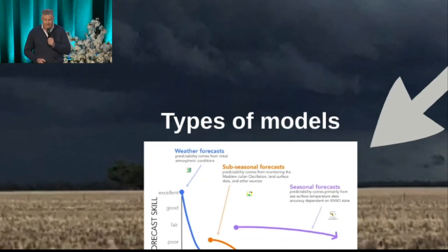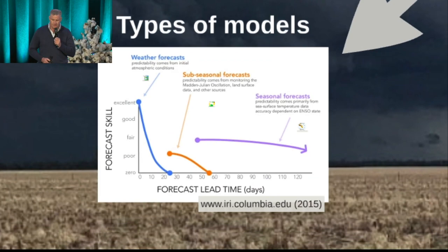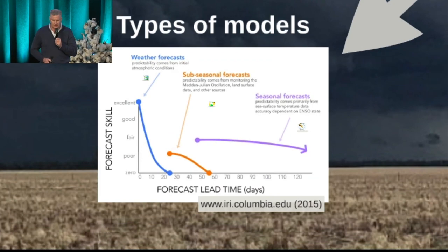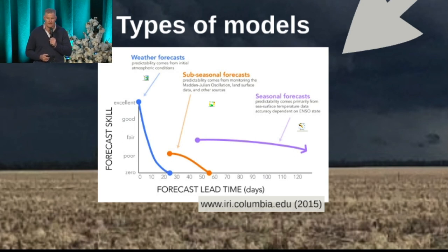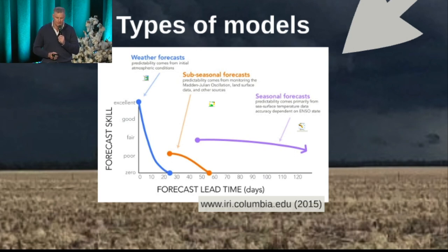Here's a really interesting chart out of the US, out of the IRI, showing the three different types of models that we can use in our decision making and our risk. You'll see the purple line representing the seasonal forecast — the models or model run refreshers that come out at the end of every month with the Bureau and other research agencies, looking at that seasonal 90-day time scale.